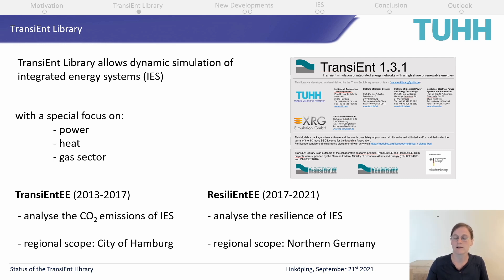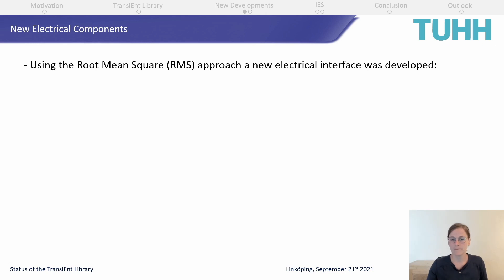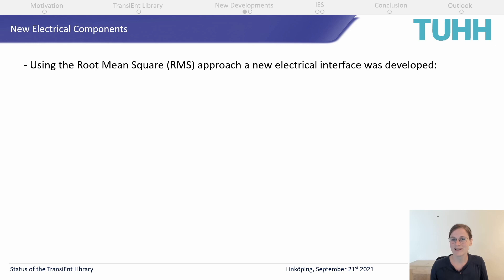Let's start with the power sector. In the Transient EE project, we used the approach of a simple copper plate because the electric grid of Hamburg is quite small, and we could assume that transmission losses could be neglected. But when looking at the Northern German electrical grid, there is considerably more transmission loss, along with several other phenomena we wanted to examine. Therefore, we used the root mean square approach, which is quite common in the electrical engineering sector.